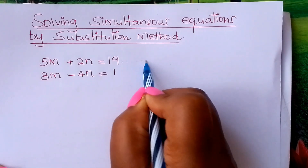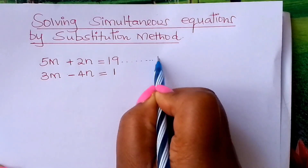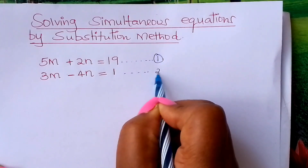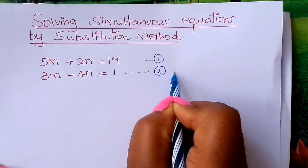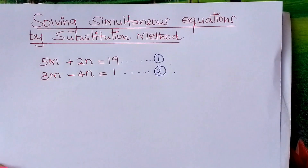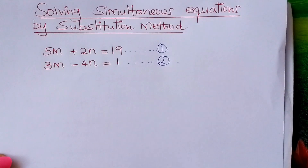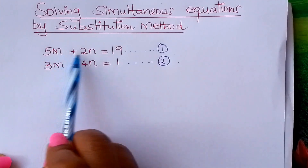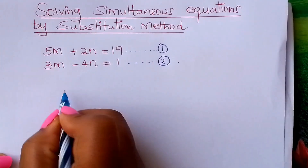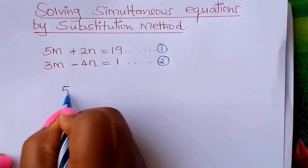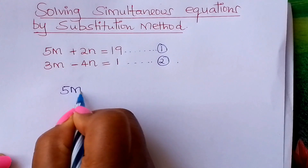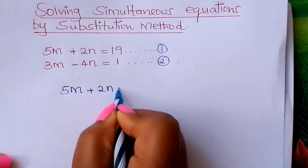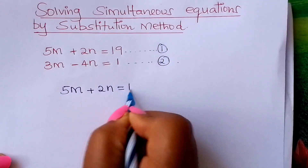Label the first equation as equation 1, and the second as equation 2. From there, pick either the first equation or the second. Let us pick the first: 5m plus 2n equals 19.